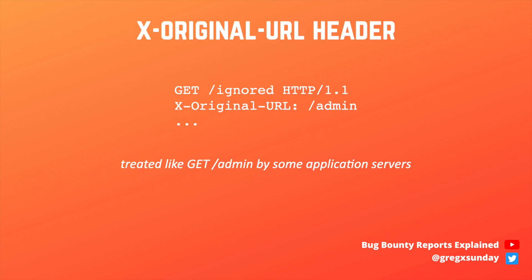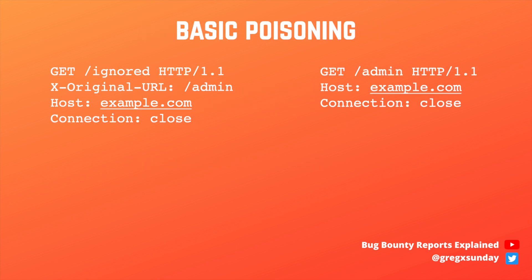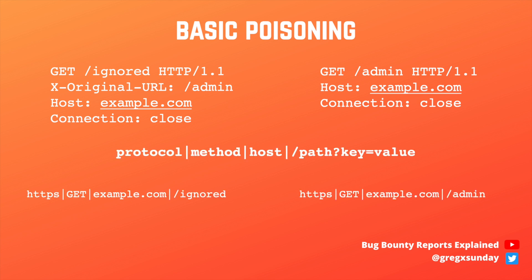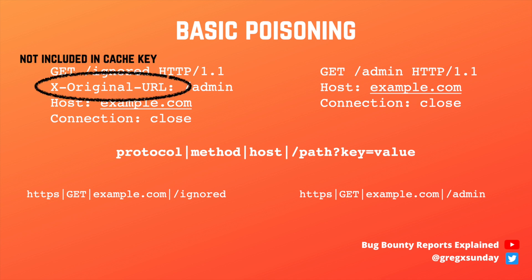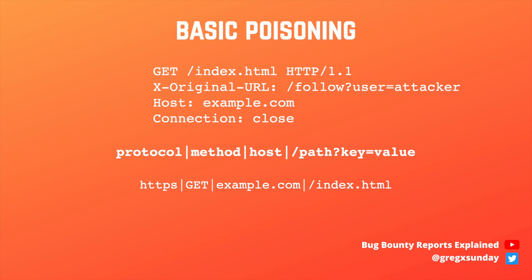For example, many PHP applications support the X-Original-URL header. So both requests on the screen will be treated the same way by the PHP server, but they will have completely different cache keys. In such a case, we can poison the cache using such a request, so when a legitimate user tries to visit index.html, they will get a response from cache from the path specified by us.